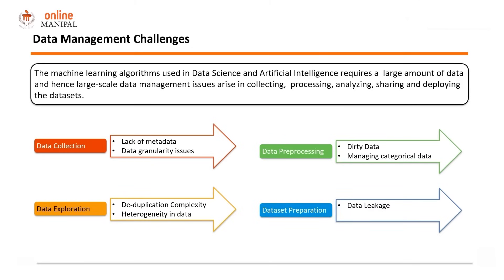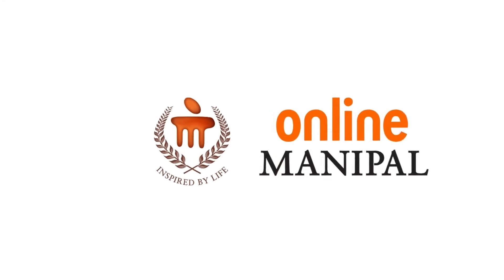Another data management challenge arises during dataset preparation. One issue is data leakage — when creating test and training data, if they are not well segregated, the model will not perform well when it sees new, unseen data. Test and training data must be bifurcated well for the model to be robust. Another area to take care of is maintaining data quality, which means the data needs to be accurate, timely, and complete for it to be used properly for any kind of information generation.